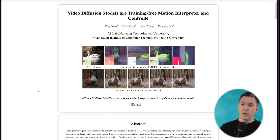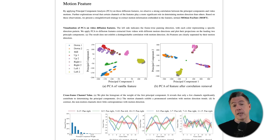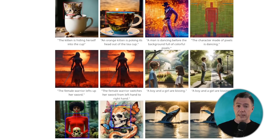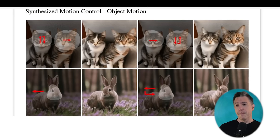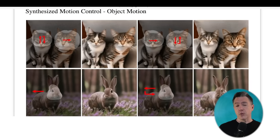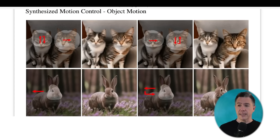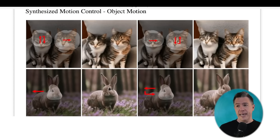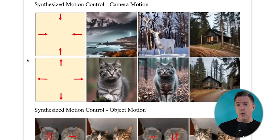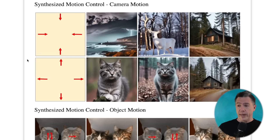Next up, we have MoFit — video diffusion models are training-free motion interpreter and controller. MoFit is a new method for understanding and controlling motion in AI generated videos, feeling a bit like a simplified version of BoxMator. The approach, called synthesized motion control, begins by masking an area and then providing arrow commands to say what motion you want that area to take. You can provide multiple arrows or multiple motions — a bunny looking to the left, a cat nodding up and down, or a bunny vehemently saying no. You can also push in and zoom out by providing the appropriate arrows.